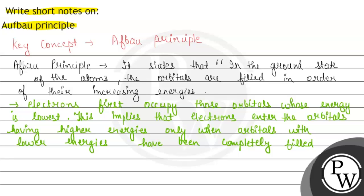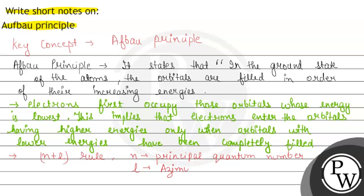The main point is knowing which orbital has more or less energy. For this, we have the n plus l rule. Here, n represents the principal quantum number and L represents the azimuthal quantum number.